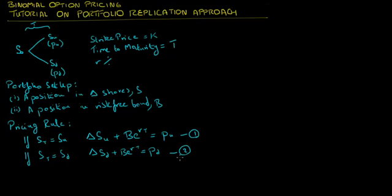The question is: what should be the value of delta and the bond position? Our pricing rule gives us two equations and two unknown variables, delta and B, the current value of the bond position. Since we have two securities and two possible scenarios, we can easily solve for delta as well as the value of the bond position. Let's solve these simultaneous equations to get the values of delta and B.